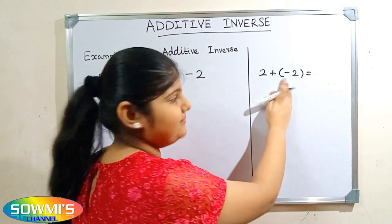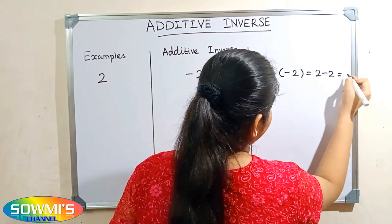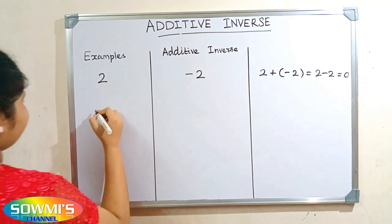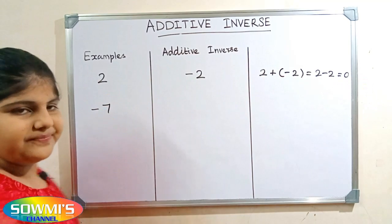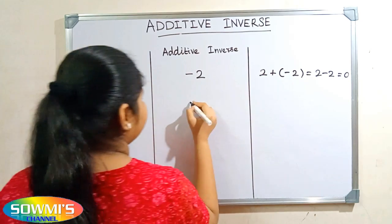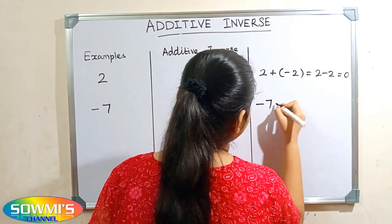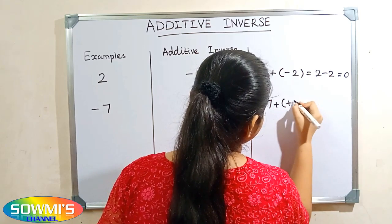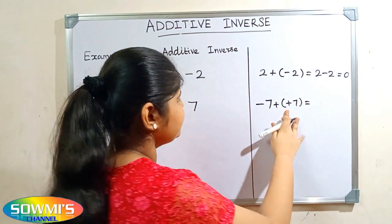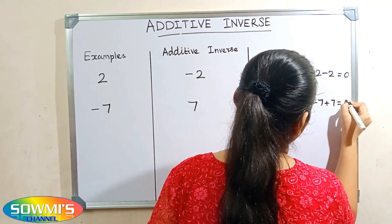two plus minus two — plus into minus will be minus — so two minus two which is equal to zero. Next we will take another example: minus seven. The additive inverse of minus seven is seven. According to the property, minus seven plus seven — plus into plus will be plus — so minus seven plus seven is equal to zero.